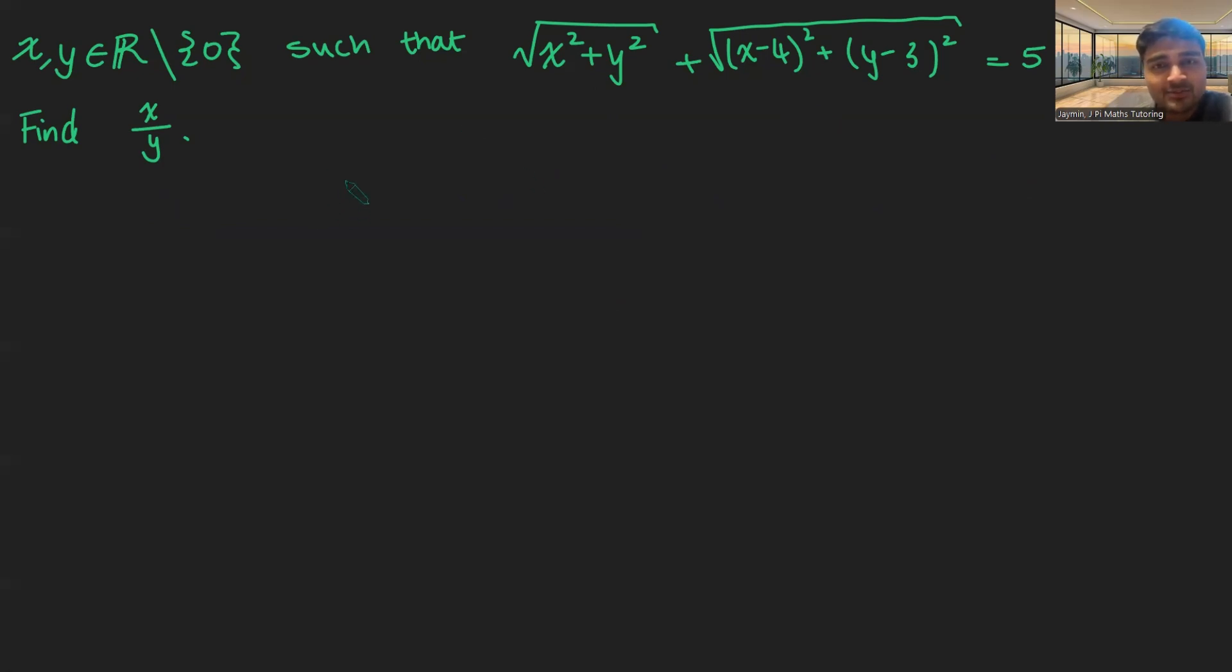Now you might be tempted to solve this by doing a substitution like x equals alpha y and then substituting into this equation here and trying to cancel out all the y's and be left with just an alpha. You might be able to do it that way, but it's certainly going to involve some very messy algebra. We don't want to do it that way. There's a very nice trick to this.